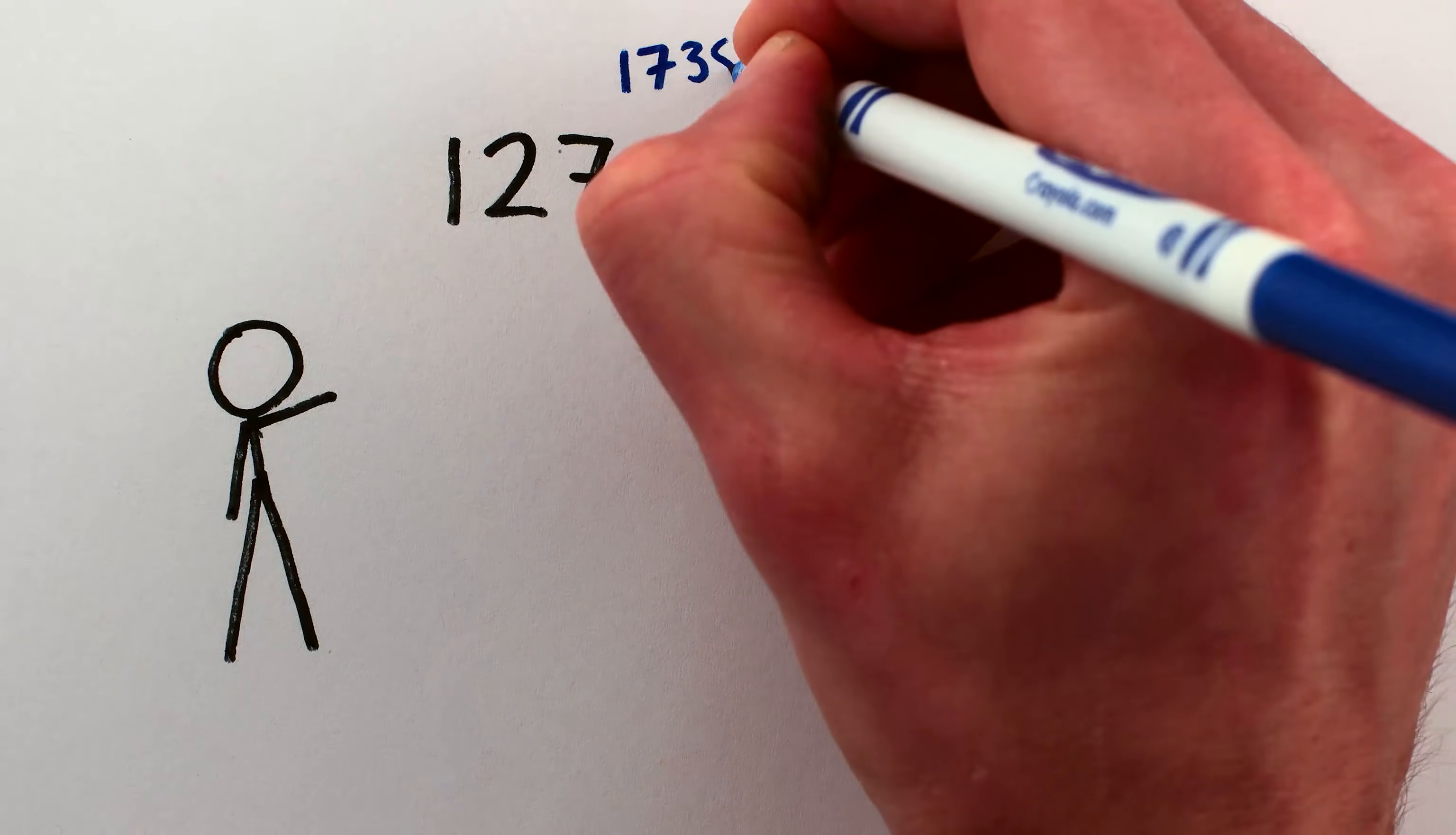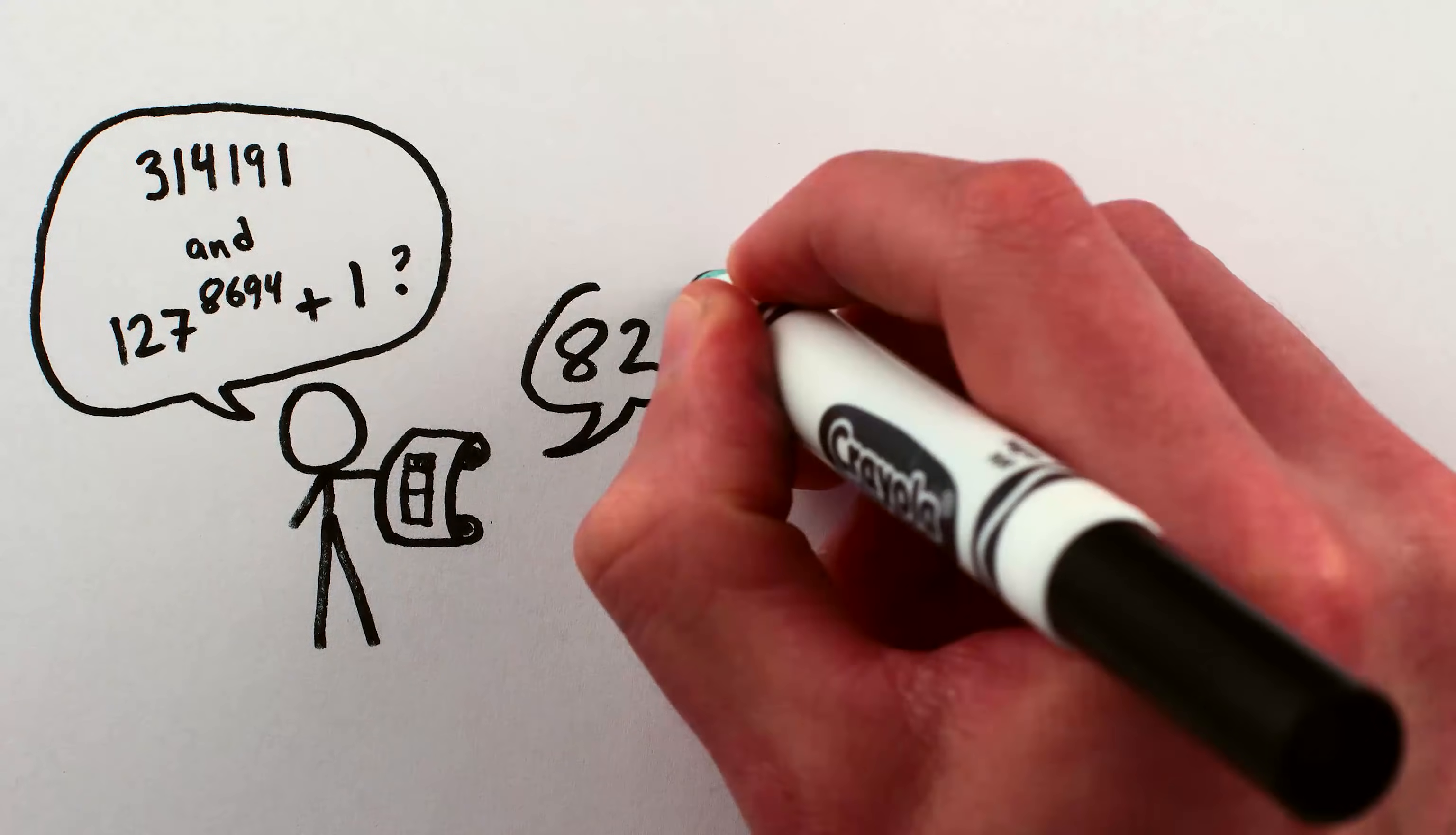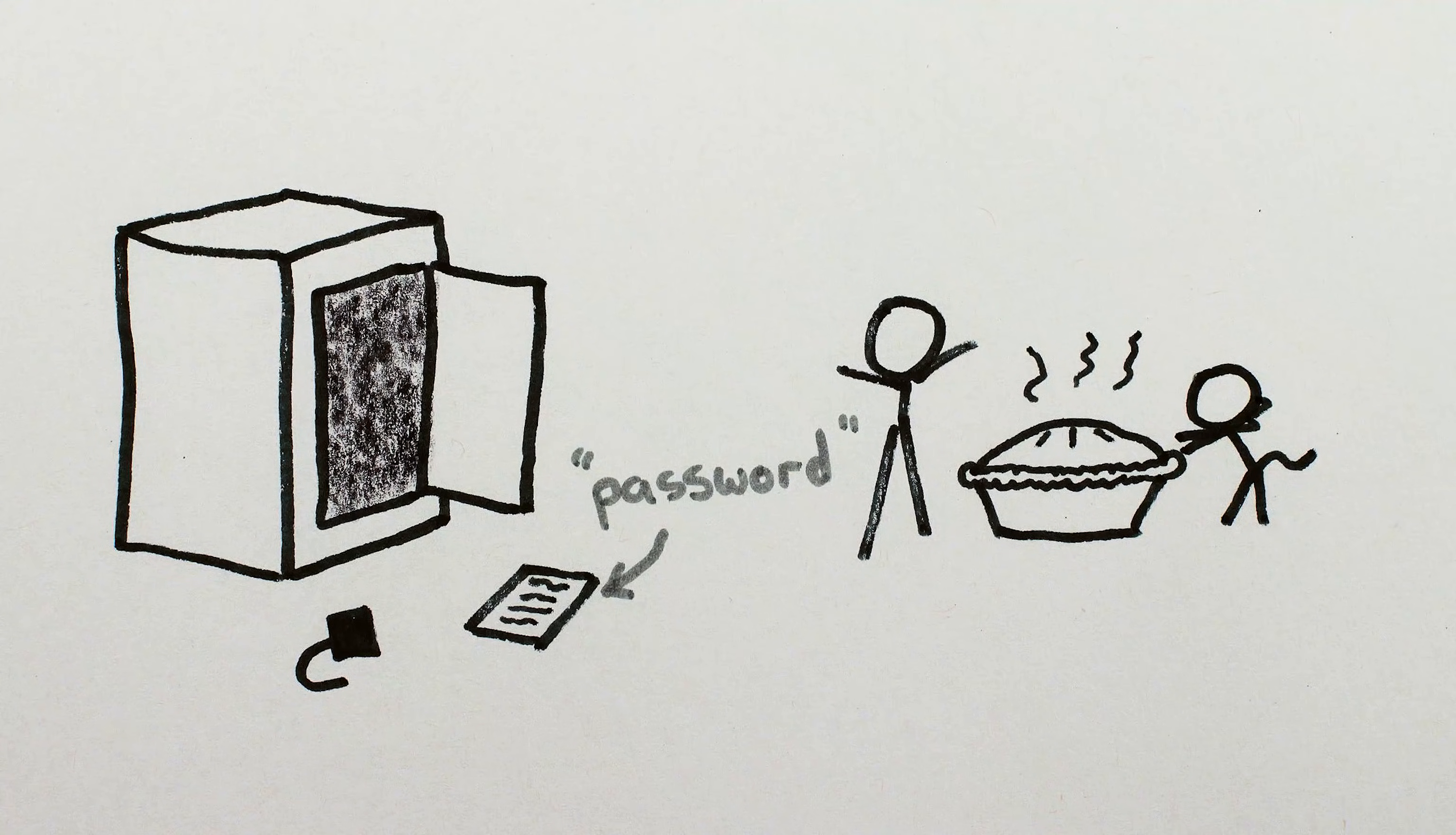And so raising 127 to p over 2 gives 127 to the 8694, plus or minus 1, for our new and improved guess of a number that shares factors with 314191. Using Euclid's algorithm on 314191 with 127 to the 8694 plus 1 gives a common factor of 829. And using it on 314191 with 127 to the 8694 minus 1 gives a common factor of 379. And 829 times 379 does indeed give us 314191. So, now we can break the encryption, and you can have your pie.